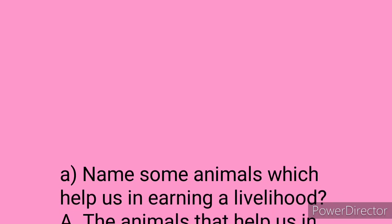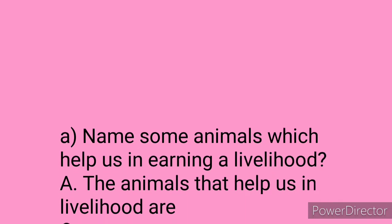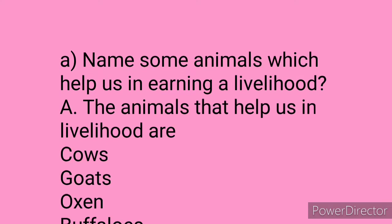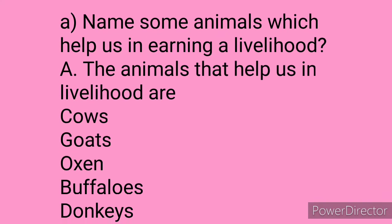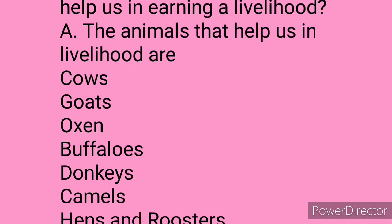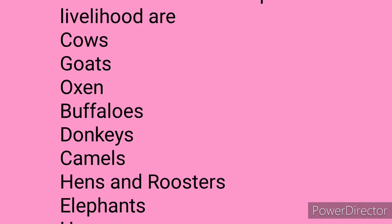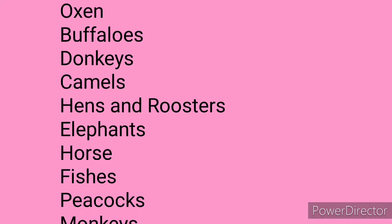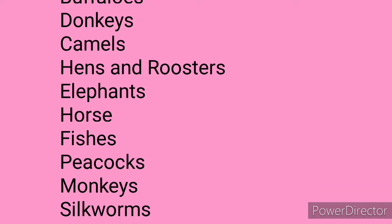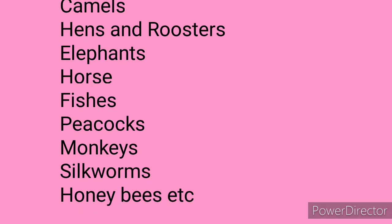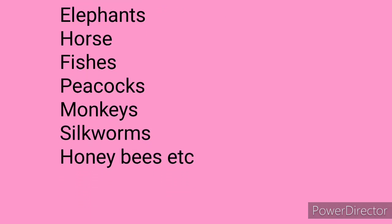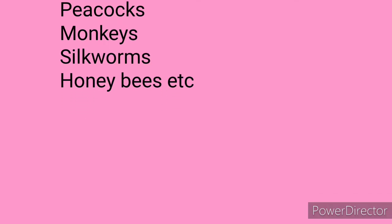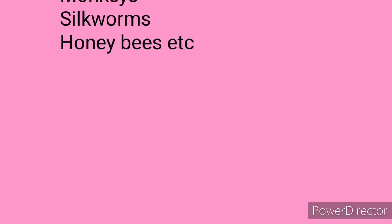First question: Name some animals which help us in earning a livelihood. Answer: The animals that help us in livelihood are cows, goats, oxen, buffalos, donkeys, camels, hens and roosters, elephants, horses, fishes, peacocks, monkeys, silkworms, honeybees, etc. You can pause and write the answer.